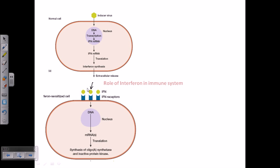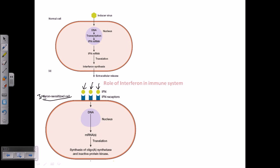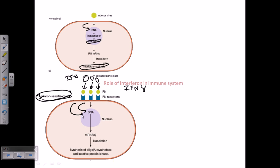The interferon proteins are released into the extracellular space. These IFN proteins then bind with the interferon receptors found on interferon-sensitized cells. Interferon receptors are a type of immune receptor, similar to cytokine or chemokine receptors, having four different domains.